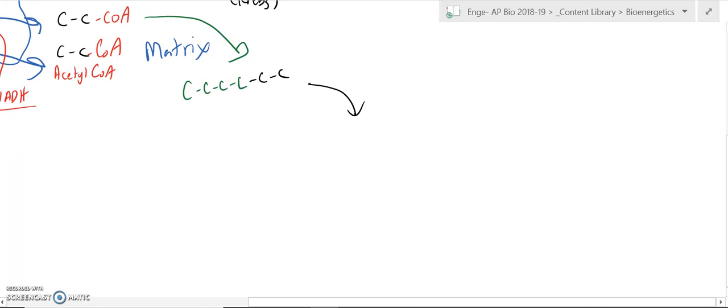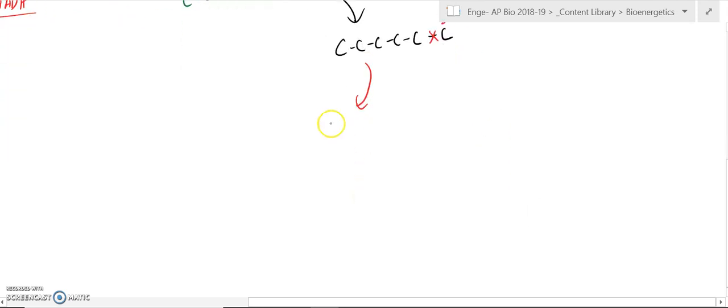We are then going to pop off one of the carbons. That's CO2, leaving us with a five-carbon molecule. We will pop off another one of the carbons. More waste. More CO2 is wasted, or is released.